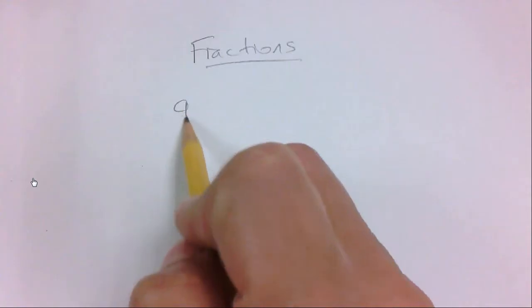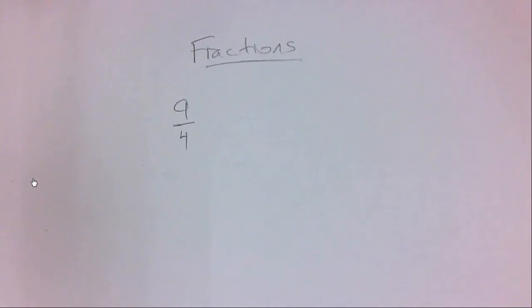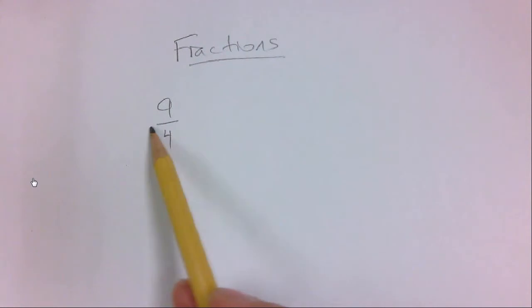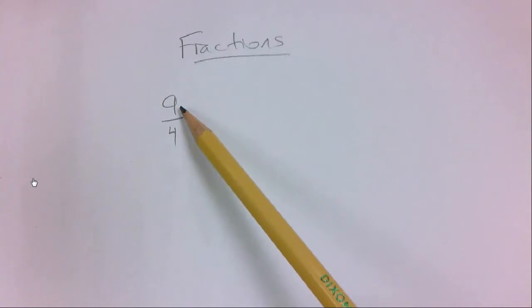First thing is, let's just review what a fraction is. So I'm going to write a fraction, this is 9 over 4. Fractions are always written as a division, so this line here indicates a division.